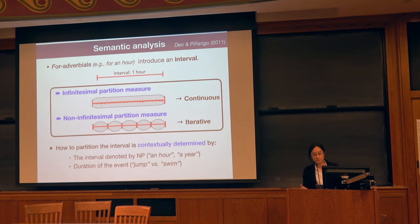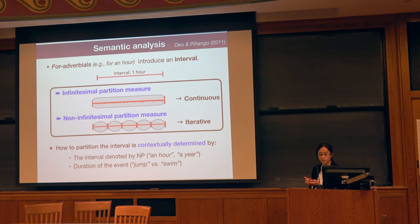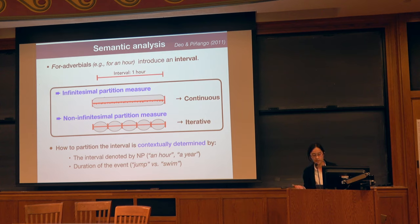We suggest that the comprehender partitions an interval based on two critical linguistic factors: the interval denoted by the noun phrase following 'for' (an hour or a year), and the conventional or lexicalized duration denoted by the verb — for example, 'jump' is point-like or short-lived, whereas 'swim' is longer or unbounded. It is through the evaluation of these two components that you get the final interpretation. That is why we say the meaning is context-determined, meaning both sentential and discourse context.